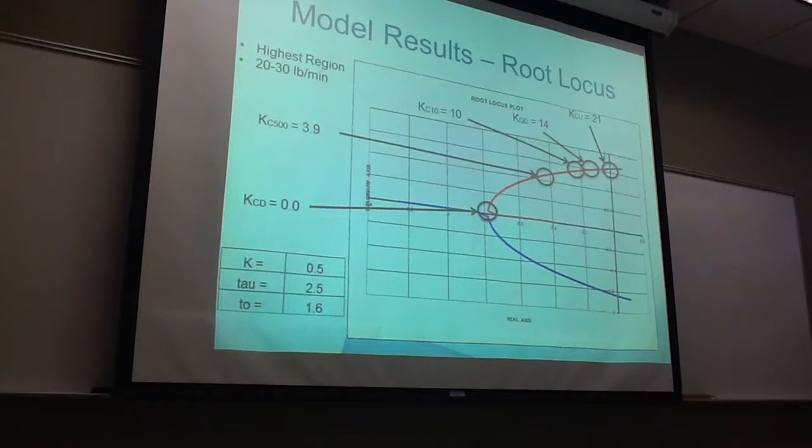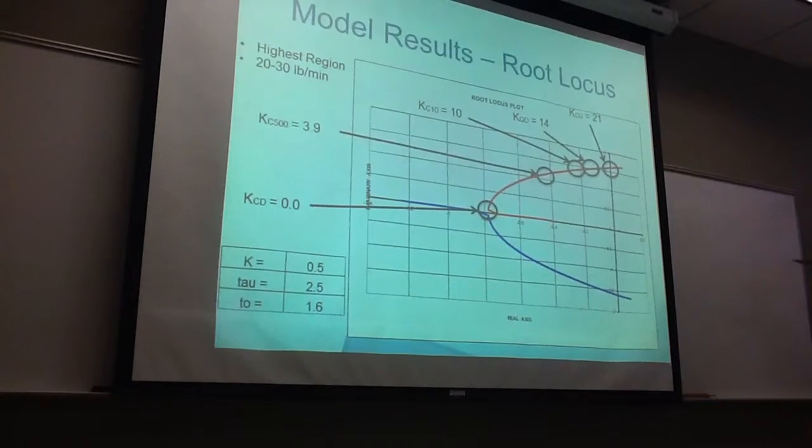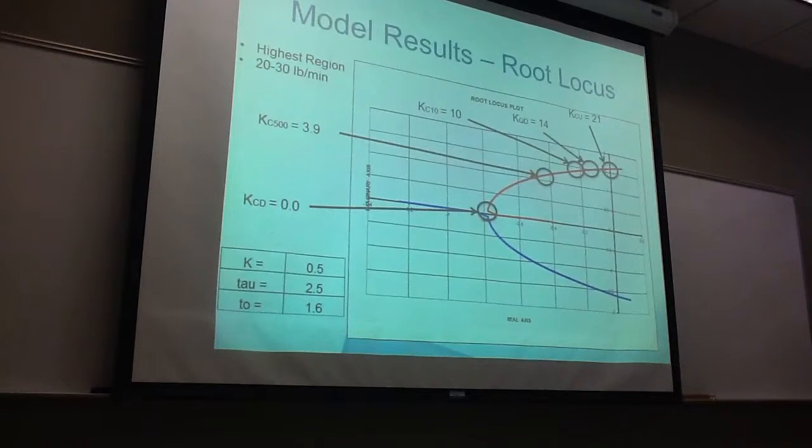And on to the highest region, which is 20 to 30 pounds per minute in the absorber air flow system. We found the critical damping to be 0, or at 0 degrees to be 0. The 1/500th decay to be 3.9, the 1/10 decay to be 10, and our quarter decay to be 14, and our ultimate to be 21.